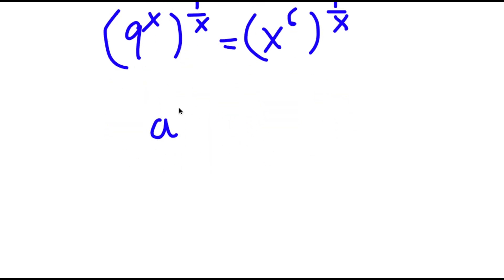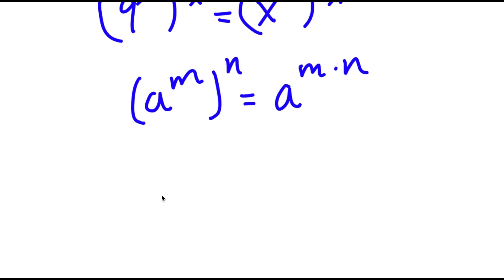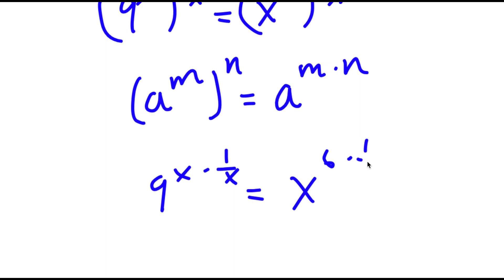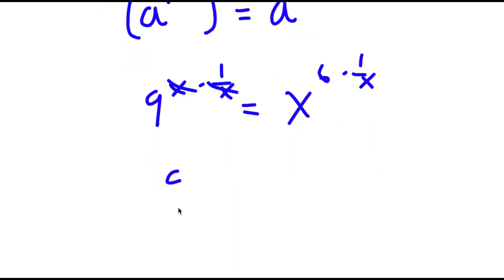Now, if I have something in the form a to the power of m to the power of n, this is equal to a to the power of m times n. So 9 to the power of x to the power of 1 over x equals 9 to the power of x times 1 over x. And x to the power of 6 to the power of 1 over x equals x to the power of 6 times 1 over x. Now, x times 1 over x — these two cancel out, so I'm simply left with 9 is equal to 6 times 1 over x, which is 6 over x.